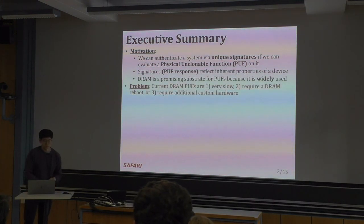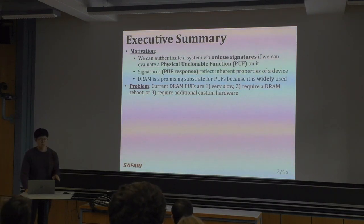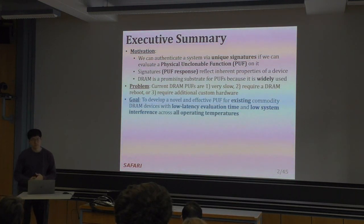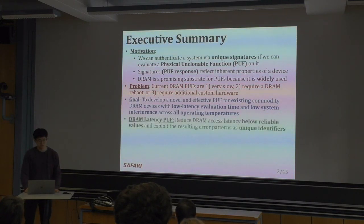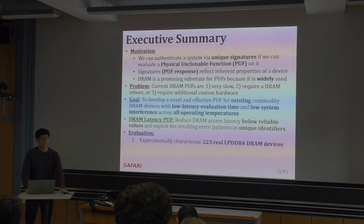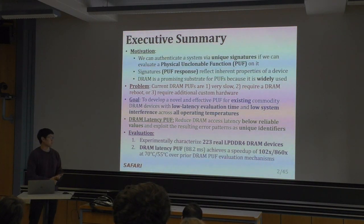The problem with current DRAM PUFs is that they're either very slow, require a DRAM reboot, or require additional custom hardware. The goal of this work is to develop a novel and effective PUF for existing commodity DRAM devices with low latency evaluation time and low system interference across all operating temperatures. We call our work the DRAM Latency PUF, and we reduce DRAM access latency below reliable values that the manufacturer recommended, exploiting the resulting error patterns as unique identifiers for the device. In our evaluation, we characterize LPDDR4 DRAM devices and find we can evaluate the DRAM Latency PUF in around 88 milliseconds, which is a significant speedup compared to prior DRAM PUF evaluation mechanisms.